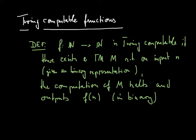So we first define what it means for a function f from natural numbers to natural numbers to be Turing computable. Such a function is Turing computable if there exists a Turing machine M such that on input N, and we assume here that on the tape itself N is represented in binary.